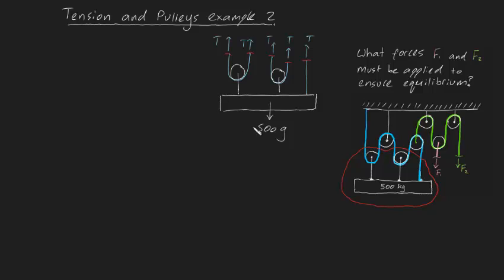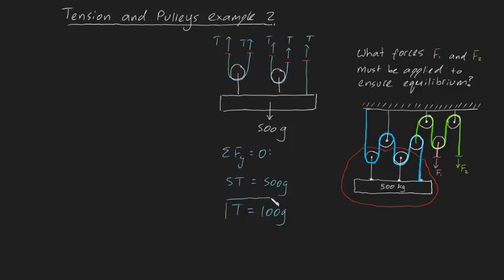Now we're ready to apply our equilibrium equations. The sum of forces in the y direction equals zero, meaning sum of forces up equals sum of forces down. We have 5T going up, equal to 500G going down. Solving this, T equals 100G, where G is the acceleration due to gravity, 9.81 m/s². So we've found the tension in the blue rope, which isn't what we were asked for directly, but it's necessary for the rest of the problem.